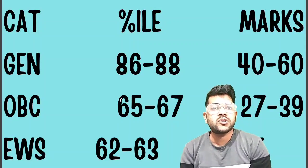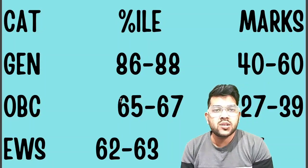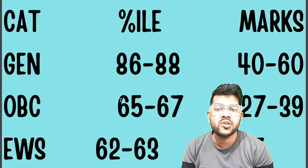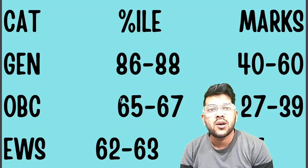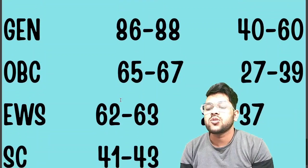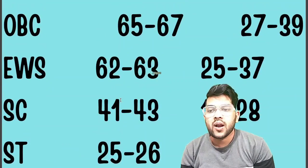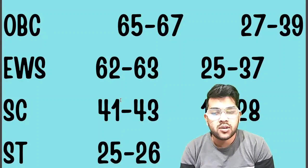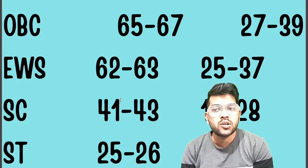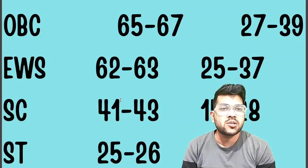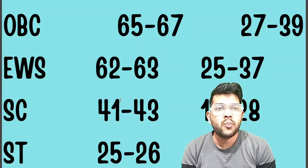There may be a 0.5 to 2 percentile change but it will be mostly similar; marks will change significantly. This year the examination is happening early so you need to score fewer marks. For SC, 41 to 43 percentile is required and marks will be 15 to 28. For ST, 25 to 26 percentile is required and marks requirement will be 8 to 16. For PWD students, you just need to sit in the examination and you'll qualify for JEE Advanced — the percentile requirement is just 0.11.